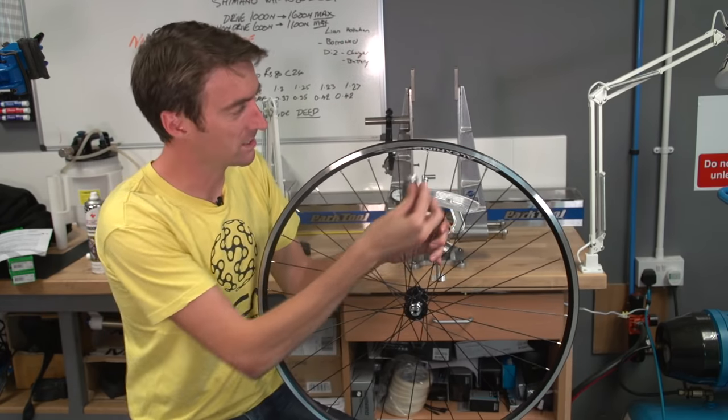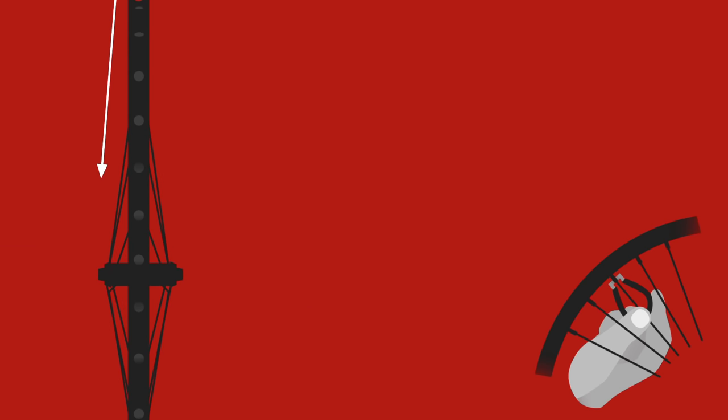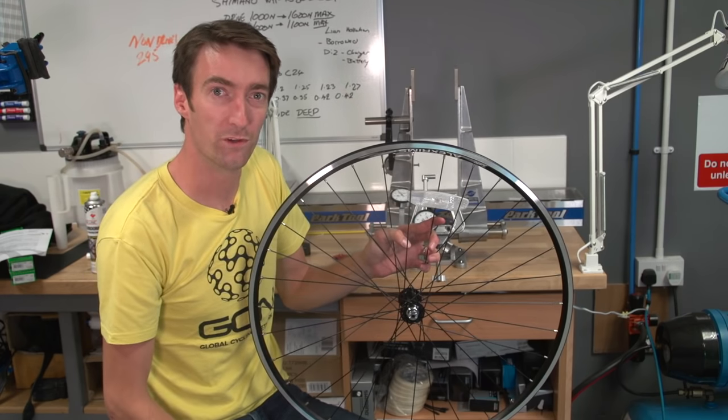Now, one of the first things to remember is that to tighten a spoke, you need to turn this spoke key anti-clockwise. The second thing to remember is that as you tighten a spoke, it will pull the rim towards the side of the hub that the spoke is attached. And the other thing it will do, it will also pull the rim towards the hub from a radial point of view.